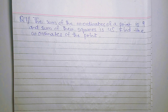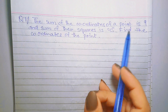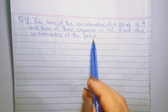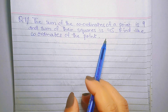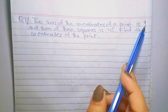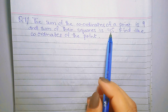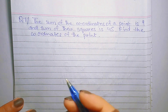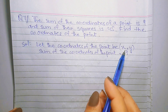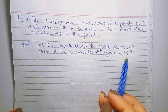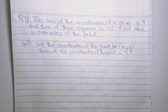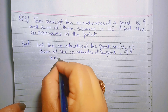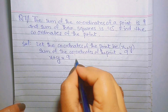Question number 7: The sum of the coordinates of a point is 9 and sum of the squares is 45 — find the coordinates of the point। इस question में किसी point की coordinates find करनी हैं जिनका sum 9 है और जिनके squares का sum 45 है। Let the coordinates of the point be x and y।